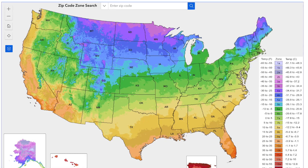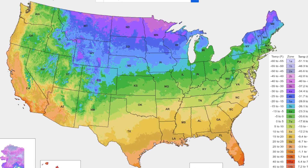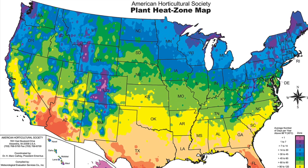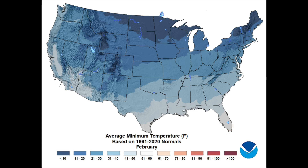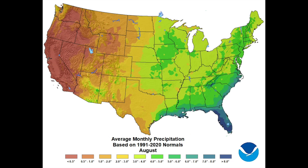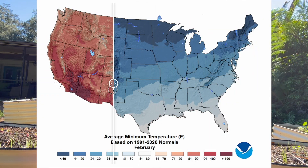Zone 8 goes everywhere from Washington State all the way down to Florida, so there are other factors to consider beyond your plant hardiness zone. One is your heat hardiness zone, which looks at how many days you spend above 86 degrees. Another map I recommend is the US Climate Atlas, which can show you the granularity of minimum temperatures, maximum temperatures, and how much rain you'll get throughout the year. You can compare areas to see how similar or different another gardener's area is from yours.